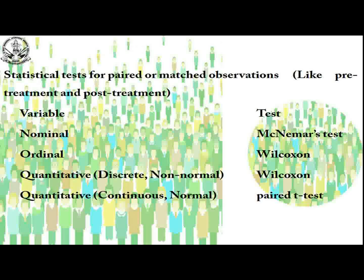For statistical tests for paired or matched observations — like pre-treatment and post-treatment — if the variable is nominal, we perform the McNemar test. If ordinal, we perform the Wilcoxon test. If quantitative with normal data and continuous distribution, then we perform the paired t-test.